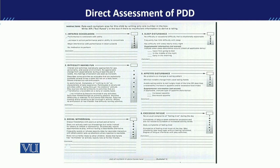The first scale we have is the Children's Depression Rating Scale. The profile we obtain from the child — or the questionnaire we administer on the child — has different domains under it, on which the questions are based.